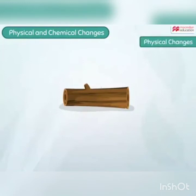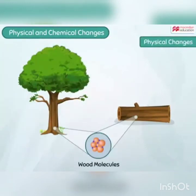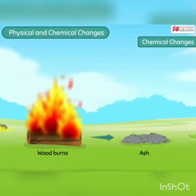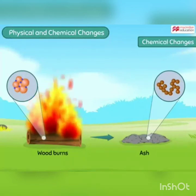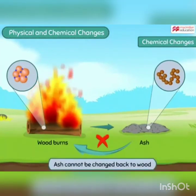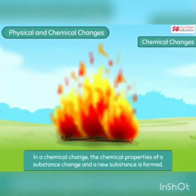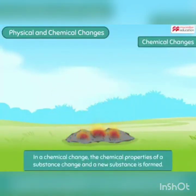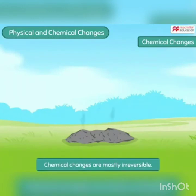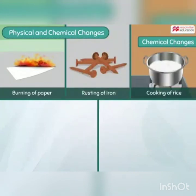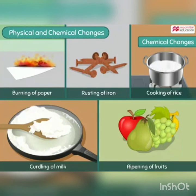Now look at this log of wood — even after being cut from the tree, the wood remained the same. But what happens when this log of wood is set on fire? Upon burning, the wood changes into ash. Ash is a new substance which has different chemical properties than wood, and it cannot be changed back into wood again. Such a change where the chemical properties of the substance change and a new substance is formed is called a chemical change. Chemical changes are mostly irreversible. Burning of paper, rusting of iron, cooking of rice, curdling of milk, and ripening of fruits are all chemical changes.